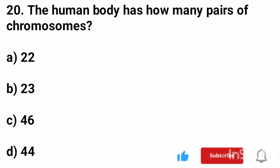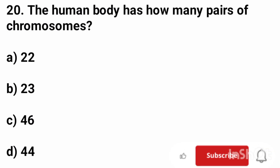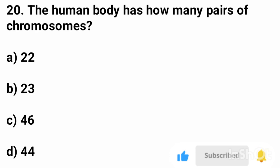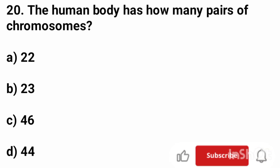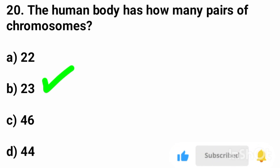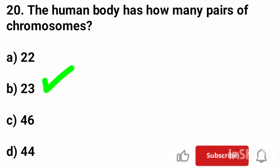Question number 20. The human body has how many pairs of chromosomes? The correct answer is option B, 23.